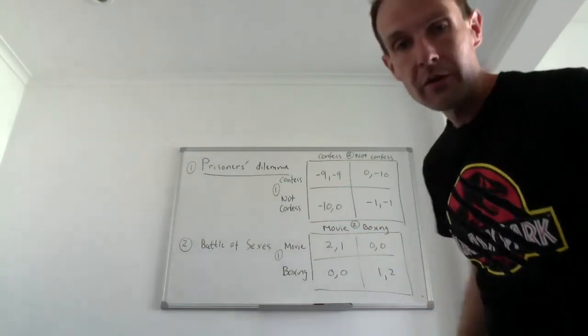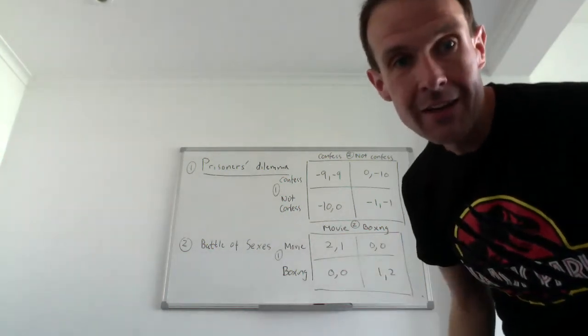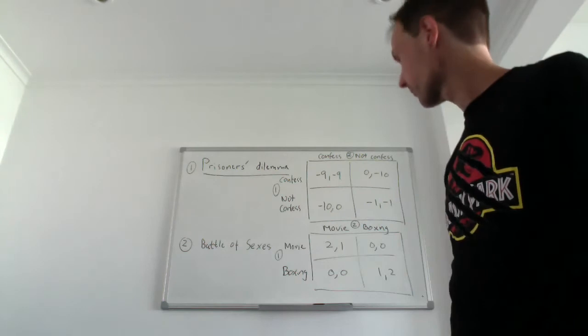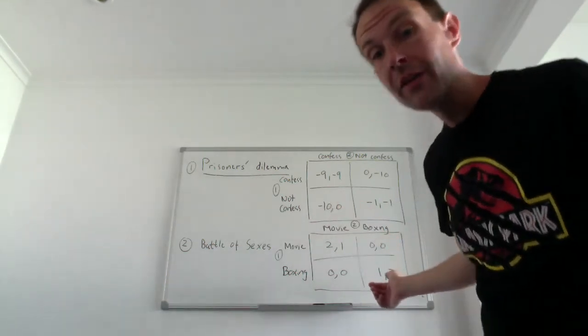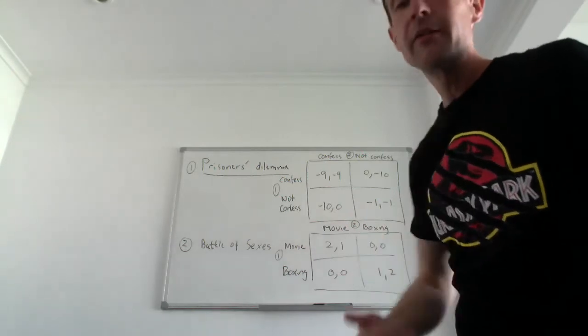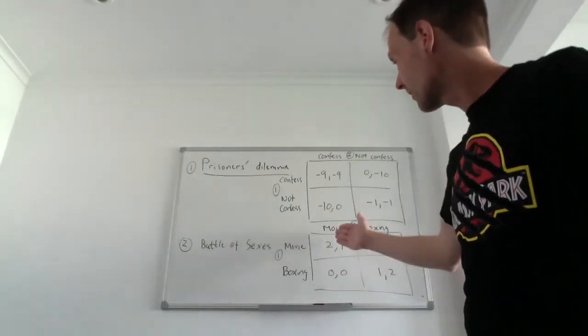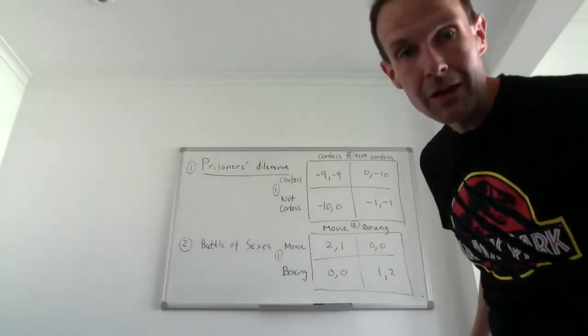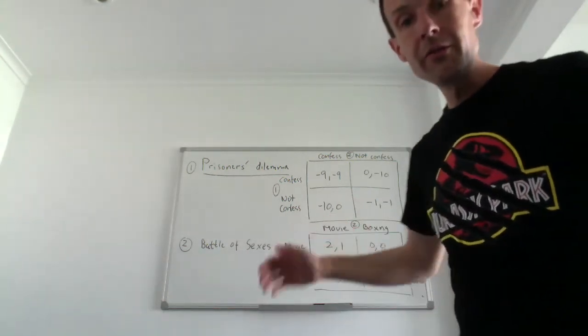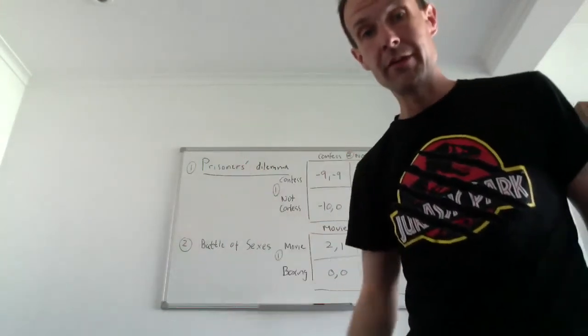The interesting part is that they don't want to be apart. They don't want to see a movie or boxing separately. Being apart doesn't give them any payoff. So this is another classic example. How do we solve it? How can these two, male and female, take a decision? They very much like to spend time with each other but are we going to see a movie, are we going to see a boxing match? You're studying people's behavior, preferences and see what is the best outcome of the game.